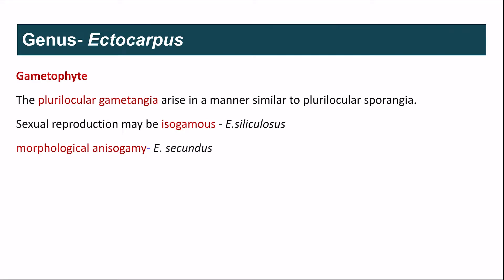In the gametophytic thallus, plurilocular gametangia are formed in a similar manner to plurilocular sporangia in the sporophyte. Plurilocular gametangia have many locules and each locule forms a biflagellate pyriform gamete. Sexual reproduction may be isogamous when both fusing gametes are morphologically and physiologically similar, as in Ectocarpus siliculosus. Whereas in Ectocarpus secundus, one gamete is larger — the macrogamete — and the other is smaller — the microgamete — showing anisogamy.